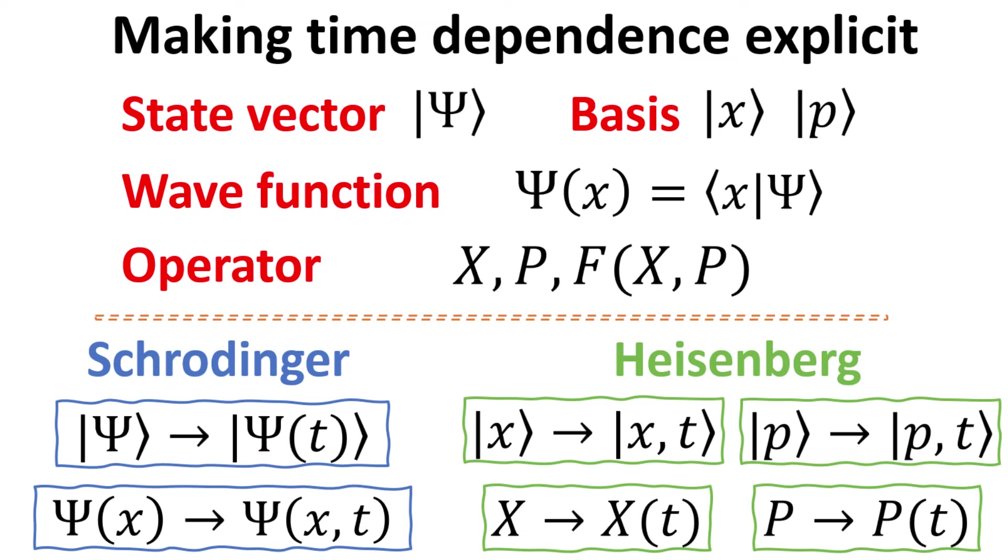On the contrary, in the Heisenberg picture, we shall leave the state vector as time independent and assign the time dependence to the x and p basis kets. We shall see how this automatically implies an explicit time dependence for the position and momentum operators.